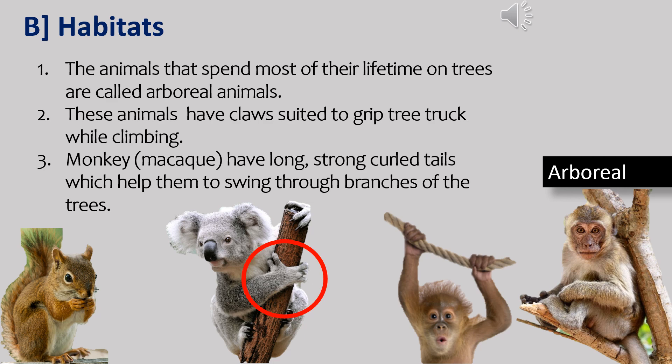Arboreal animals have claws suited to grip the tree trunk while climbing. Their broad hip bones support them while moving on the trees. Some examples of arboreal animals are monkeys, lizards, squirrels and koala bear. Monkeys such as macaque have long, strong arms which help them to swing through branches of the trees.